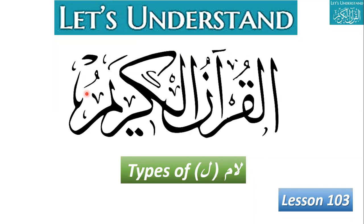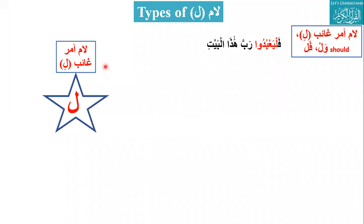So those are the Nawaasibul Fiil Al-Mudareh and Jawazimul Fiil Al-Mudareh. So today, insha'Allah, we are going to learn the types of lam. The lam also comes in Nawaasibul and Jawazimul Fiil Al-Mudareh. We already actually know two types of lam. There are five types of lam that have been used in the Quran, and we will study all of them today so you know how to differentiate between the different types of lam that come in the Quran.